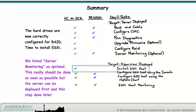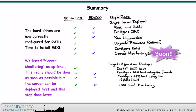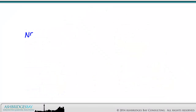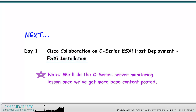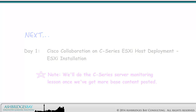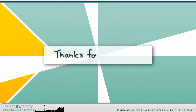Time to install ESXi. We listed server monitoring as optional — this really should be done as soon as possible, but the server can be deployed first and this step done later. Coming up next: Cisco Collaboration on C-Series, ESXi Host Deployment, ESXi Installation. Please note, we'll do the C-Series server monitoring lesson once we've got more base content posted. Thanks for watching.